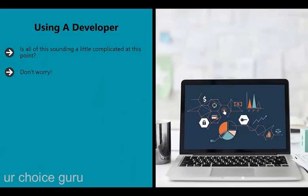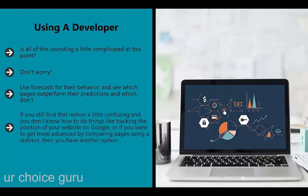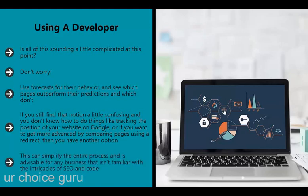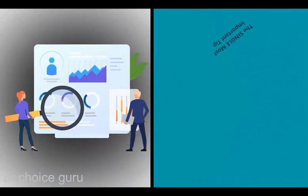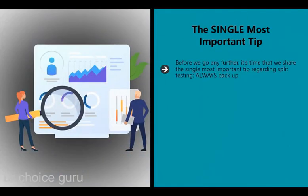Take two groups of pages, make a few changes to one, then monitor their performance over time. Use forecasts for their behavior and see which pages outperform their predictions. If you find tracking or redirect implementation confusing, you have another option: hire a developer or marketer to handle the process for you. This can simplify the entire process and is advisable for any business not familiar with the intricacies of SEO and code. Before we go any further, here is the single most important tip regarding split testing: always back up.